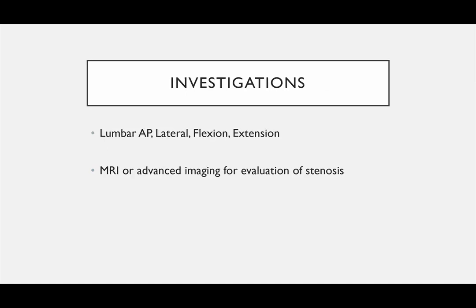For imaging, you typically get plain films and often dynamic views — flexion-extension views — to see if there's any slippage or worsening of existing slippage on static images. Flexion-extension views capture a dynamic phenomenon you often can't get on an MRI. If you want to evaluate the degree of stenosis, that can also be seen on MRI.